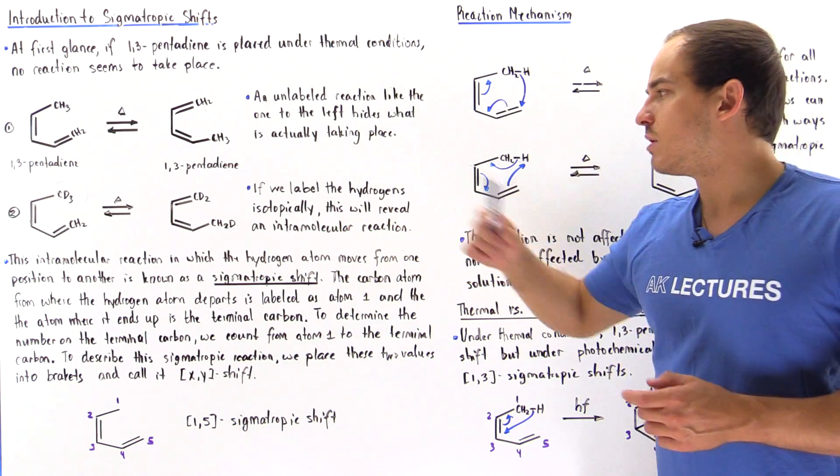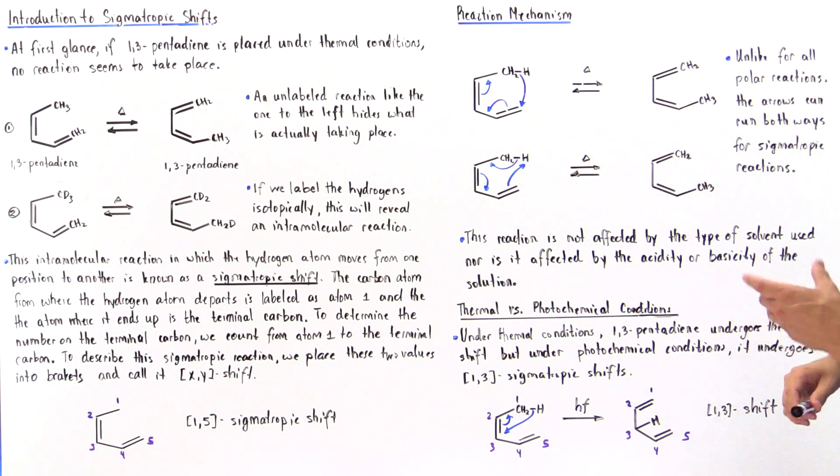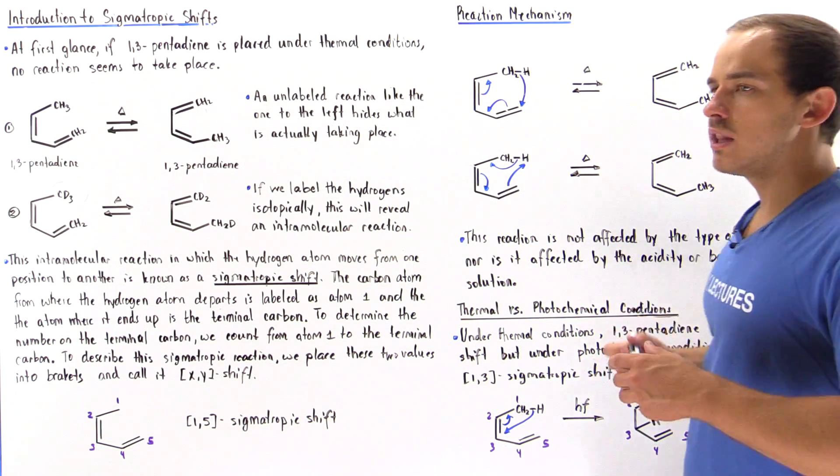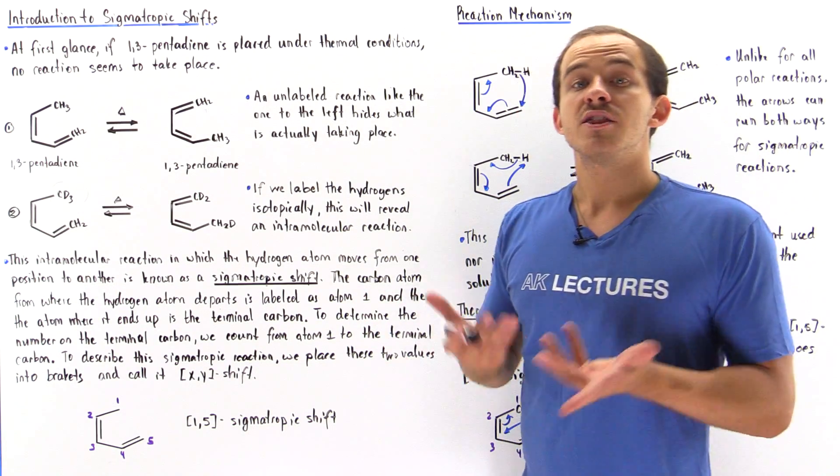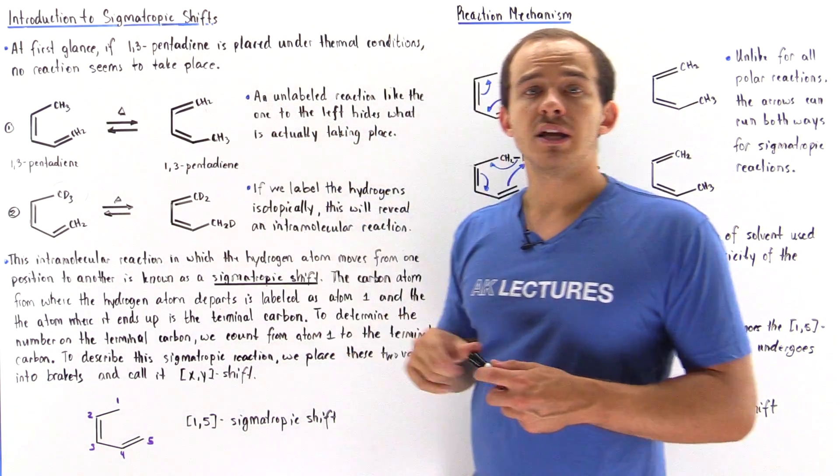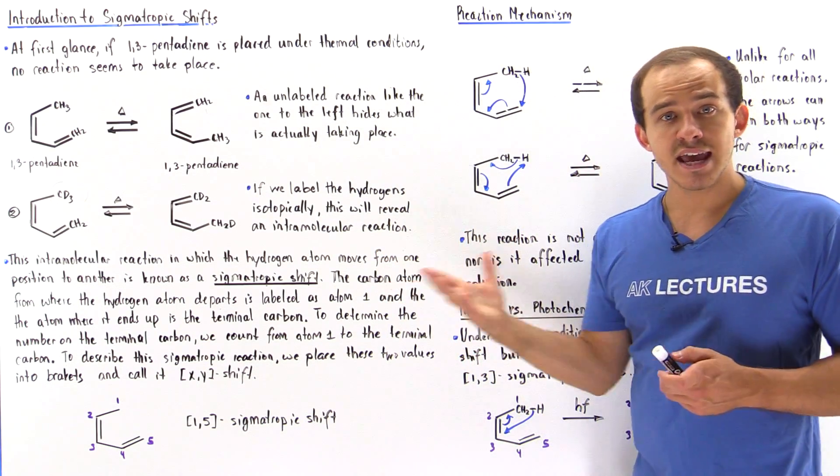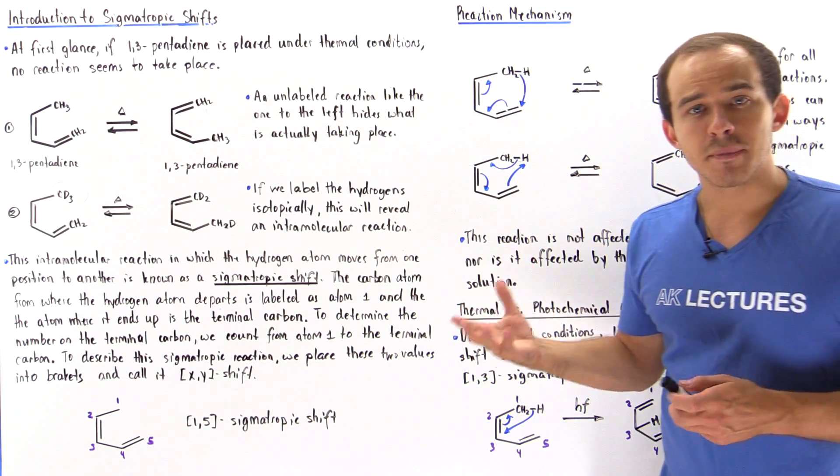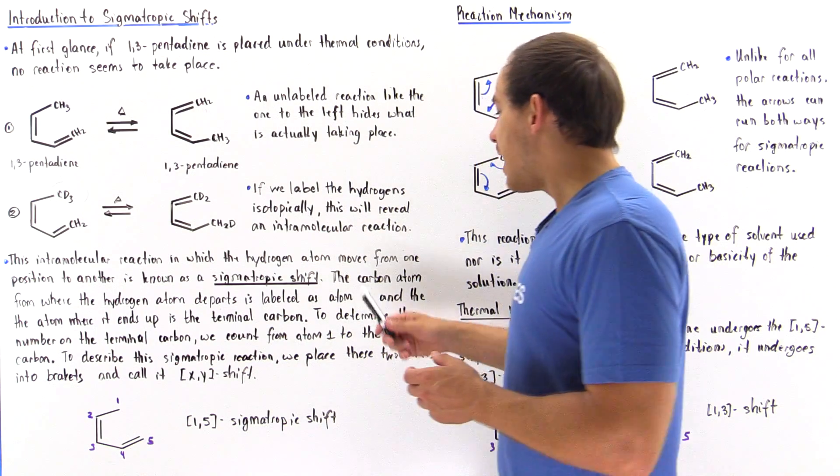So we see that if we label the hydrogens isotopically, this will reveal an intramolecular reaction in which the H atom basically moves from one carbon to a different carbon. And this is an example of a sigmatropic reaction, a sigmatropic shift.